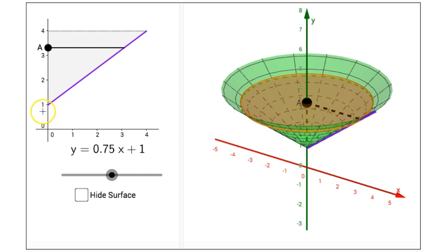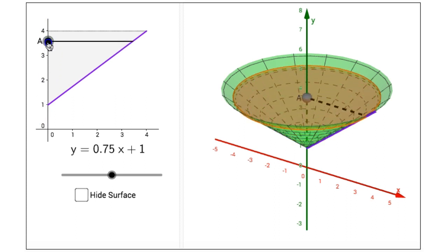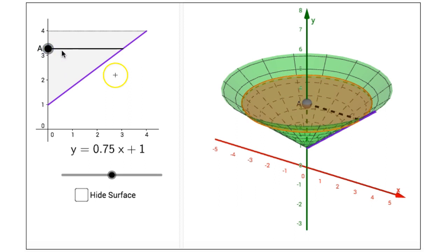Point A can be dragged along the y-axis from 1 to 4 and it changes the size of the volume element on the right side in the 3D view.